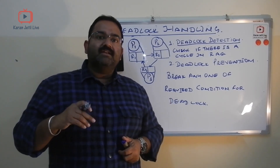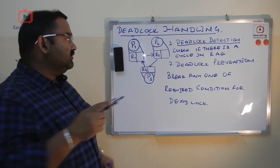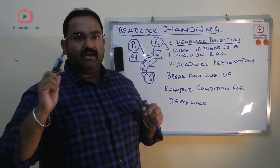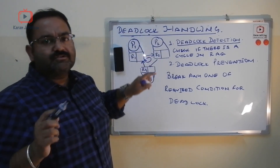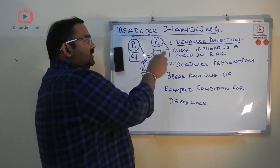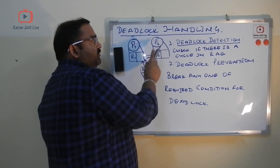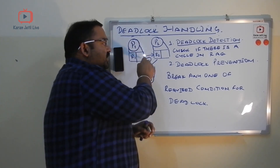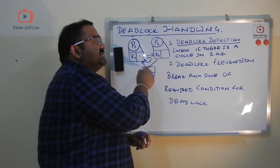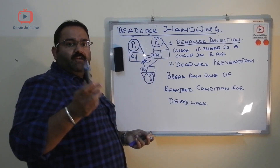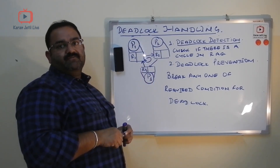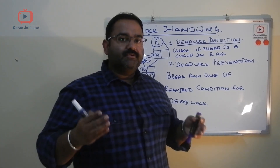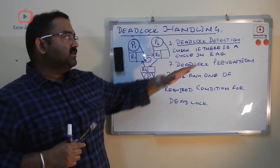To check whether a deadlock exists, we look for a cycle in a resource allocation graph. Here in this graph, P1 is waiting for P2, P2 is waiting for P3, and P3 is waiting for P1. If you look at this graph there is a cycle in it, so if there is a cycle in the resource allocation graph then there is a deadlock.